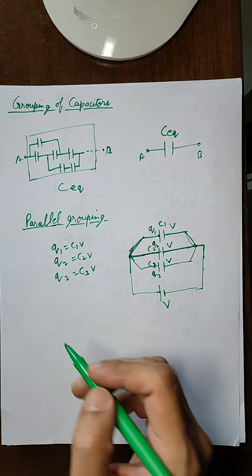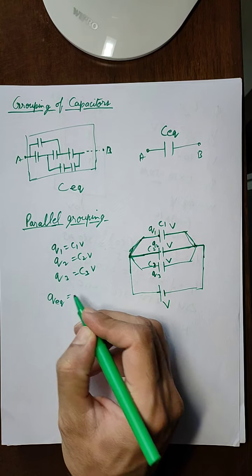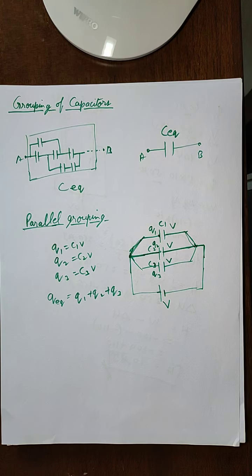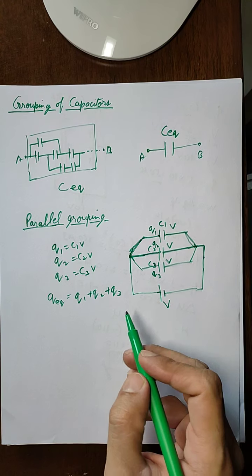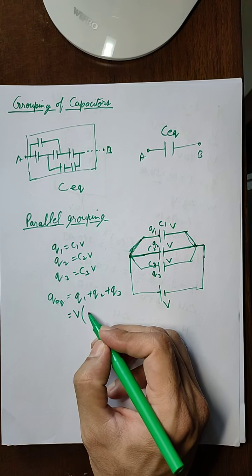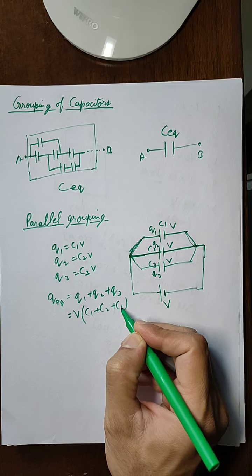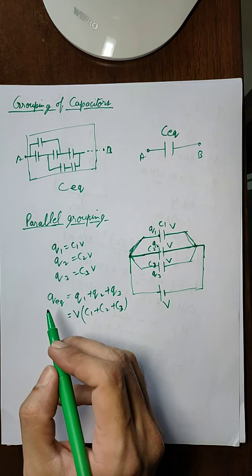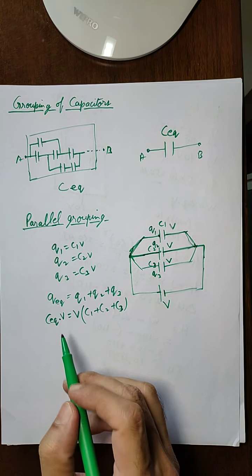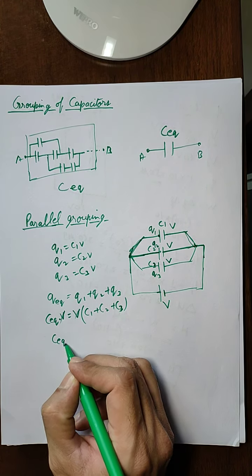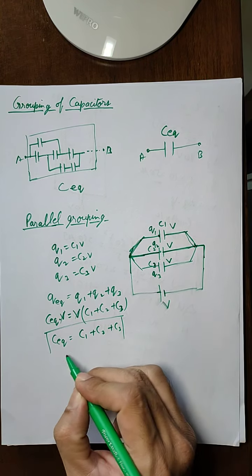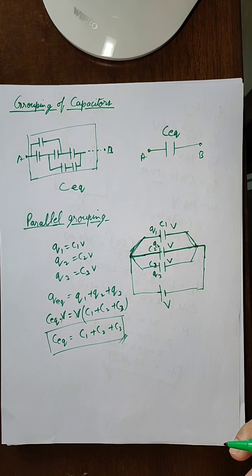Since total charge is conserved, the equivalent charge on this system of capacitors equals the sum of all charges: Q_equivalent = Q1 + Q2 + Q3. Substituting these values and taking V common, we get Q_equivalent = (C1 + C2 + C3)·V. Writing Q_equivalent as C_equivalent × V, the V cancels out, giving C_equivalent = C1 + C2 + C3. This is the general formula for the parallel combination.